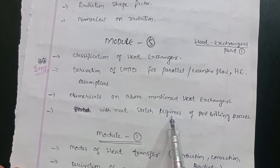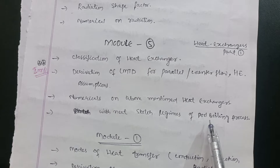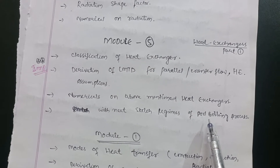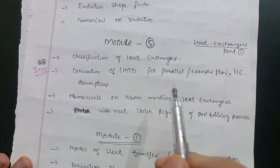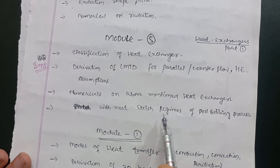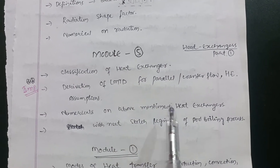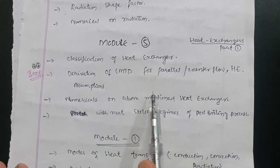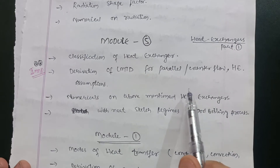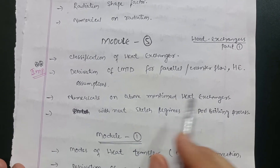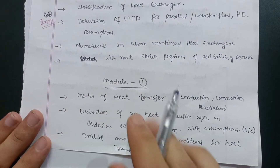Also study the sketch and regimes of the pool boiling process — it is in the second part of Module 5, but it was asked in the August 2022 paper. So go for this topic as well so that you don't lose marks. You can score 20 marks in Module 5, and if not 20, then definitely at least 10 marks in this module.